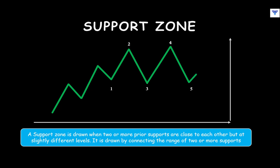Meanwhile, as the price started declining from 0.4, you may wonder which support to focus on going forward — 0.1 or the support at 0.3? In this case, because the lows at 0.1 and 0.3 are very close to each other, it would be better to draw a zone between the low at 0.1 and the low at 0.3. What we now have is a support zone rather than a support line.